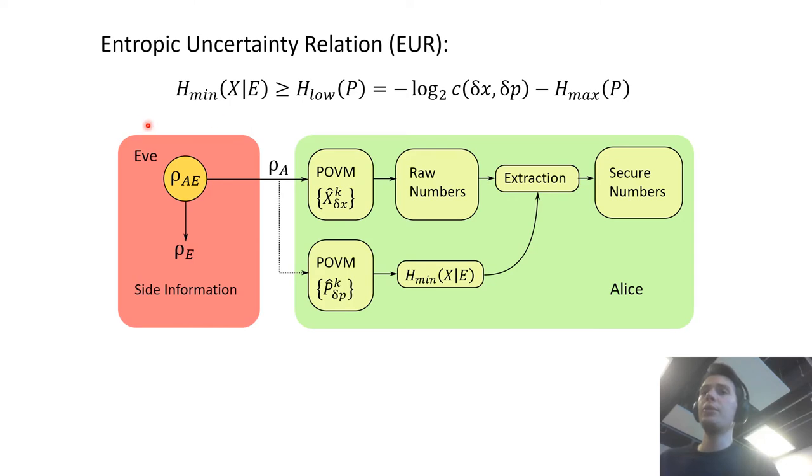And the protocol we use will be based on this entropic uncertainty relation. So we assume that the input states can be correlated to a malicious third party. And instead of measuring just one POVM X we'll actually also sometimes measure another POVM P which corresponds to the conjugate quadrature and we'll randomly switch between those two measurements. Now when we measure P we'll call that the check measurement.